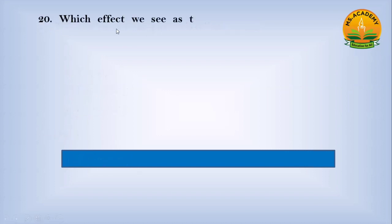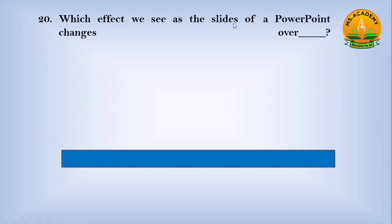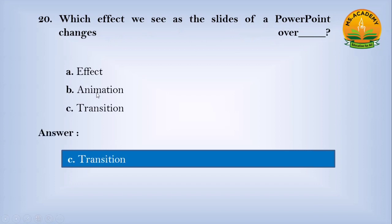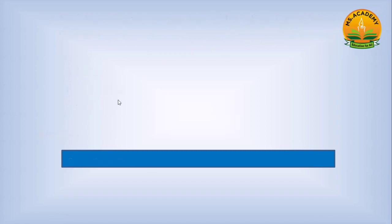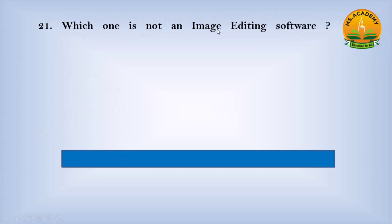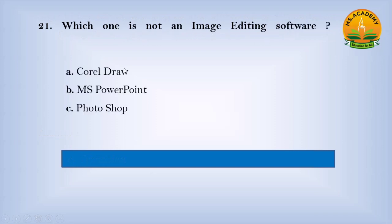Which effect do we see as the slides of a PowerPoint change over? Option A: effect, option B: animation, option C: transitions. Answer: C — transitions. Which one is NOT an image editing software? Option A: CorelDRAW, option B: MS Word, option C: Photoshop.